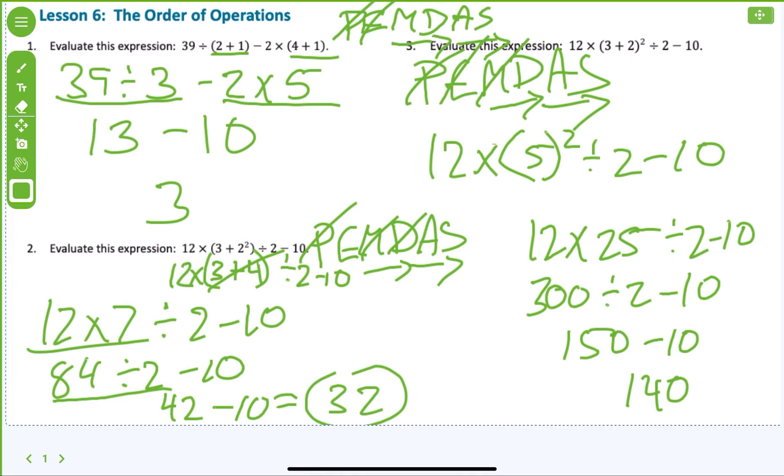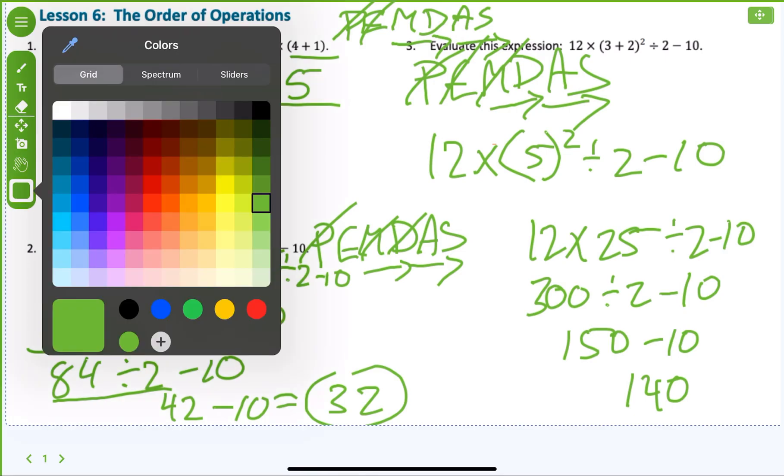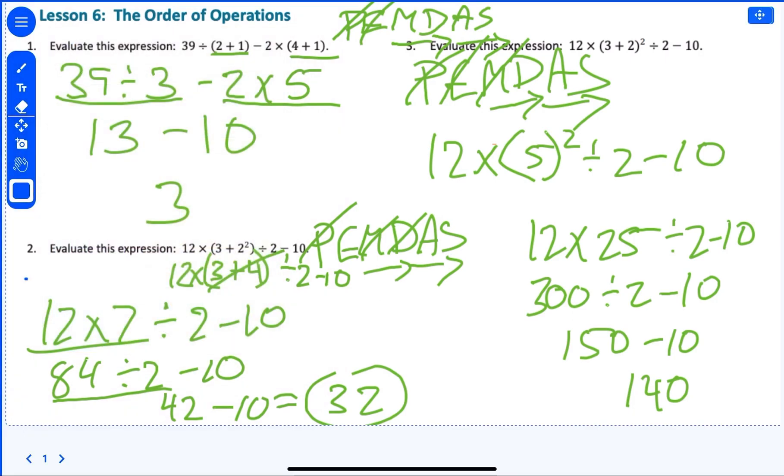Now look. I want you to see something right here. Notice that this and this is almost the exact same thing except for the exponent is inside of the parentheses, beside the 2, and on the other one, it's outside the parentheses. And look how different your answers are. That's the problem, or that is the thing with PEMDAS. That's how you have to stay in order.